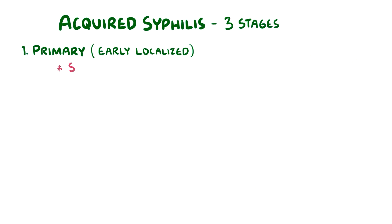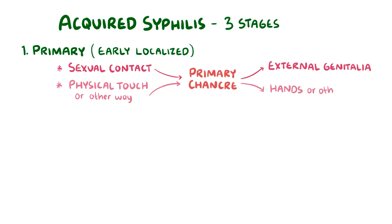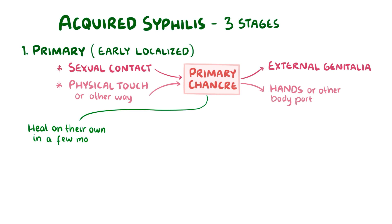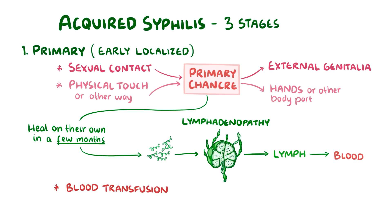In individuals who acquire syphilis through sexual contact, the primary chancre develops around the external genitalia. However, for individuals that acquire syphilis by physically touching a person or in some other way, the primary chancre might appear on the hands or some other part of the body. Syphilitic chancres typically heal on their own over a few months, but during that time, some spirochetes go to nearby lymph nodes causing lymphadenopathy, which is lymph node enlargement, and then they get into the lymph and finally into the bloodstream. If syphilis is acquired through something like a blood transfusion, then there may not be any early localized stage at all, and no primary chancre.